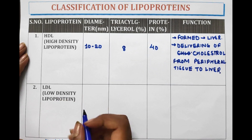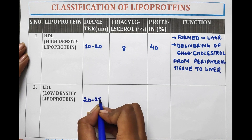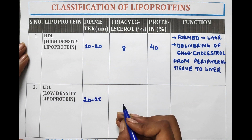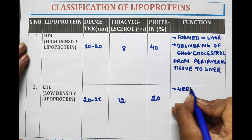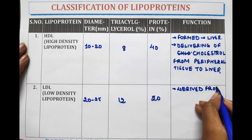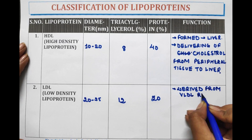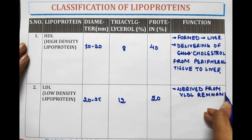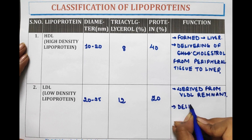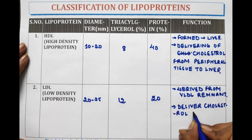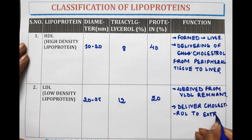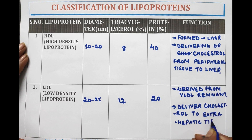LDL — low density lipoprotein — has a diameter of 20 to 25 nanometers. The percentage of triacylglycerol is 12% and protein is 20%. LDL is derived from VLDL remnant. It delivers cholesterol to extra-hepatic tissue and to the liver.